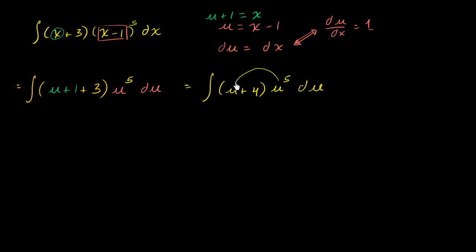And now we can just distribute the u^5. So we are left with u^6 plus 4u^5 du. And this is a pretty straightforward thing to take the antiderivative of.